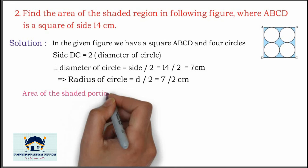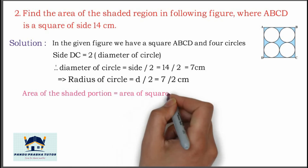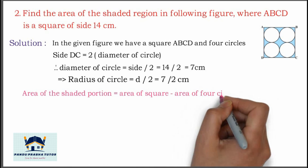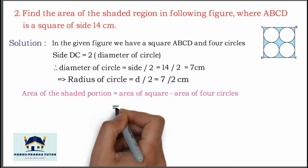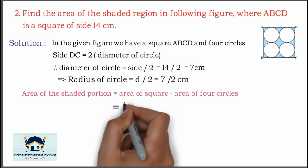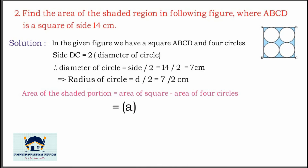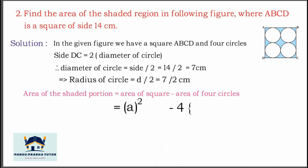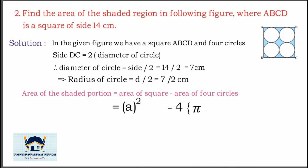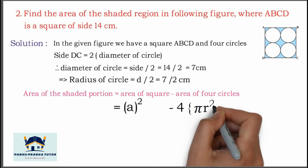Now we will write the formula. Area of the shaded portion is equal to area of square minus area of 4 circles. Which is equal to: area of square, A squared, minus 4 into π r squared.